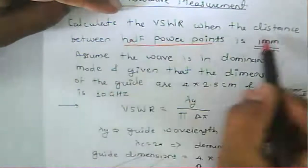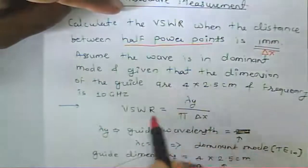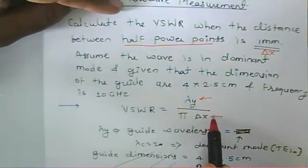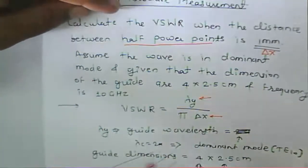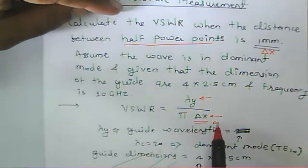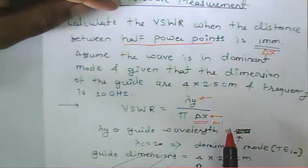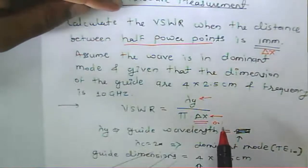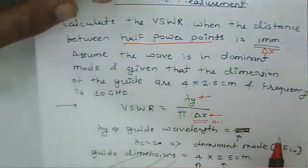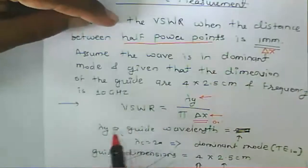To calculate the BSWR, we need to know the guide wavelength and del x. Del x is nothing but 0.01 centimeter, or you can say 1 mm. We can convert it into centimeters or meters and then calculate accordingly.